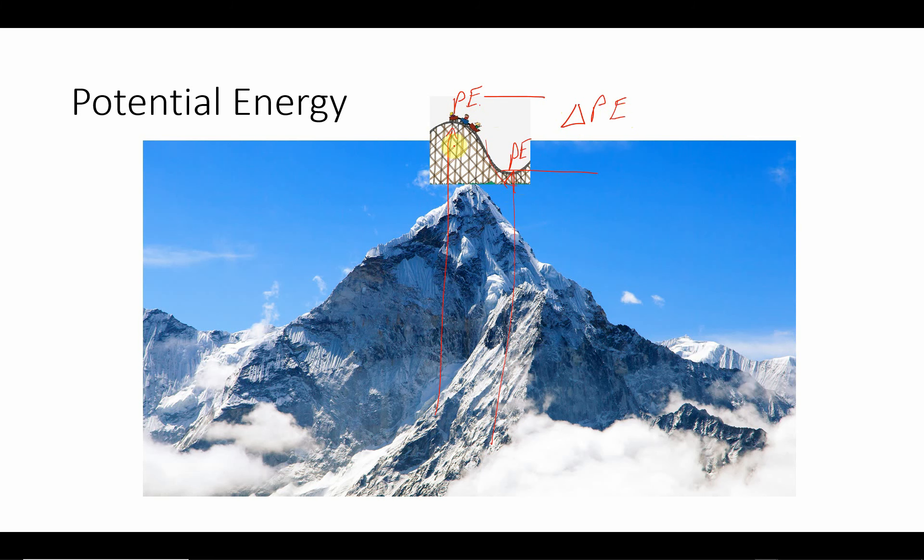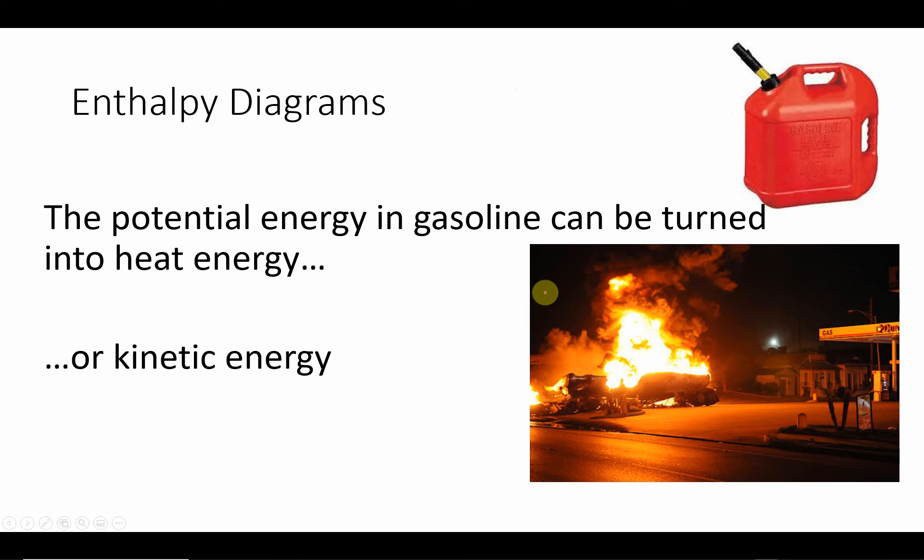If the roller coaster was sitting on the top of Mount Everest and the track was flat and you had the car on it, there would be no risk of going faster. It's the change in potential energy that really matters. And you can see why we're about to talk about Delta H.